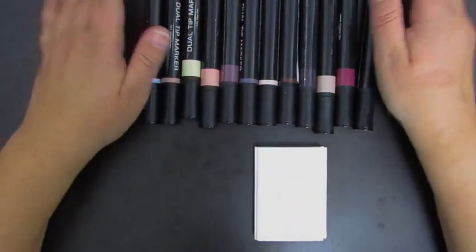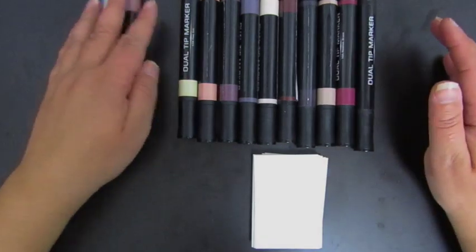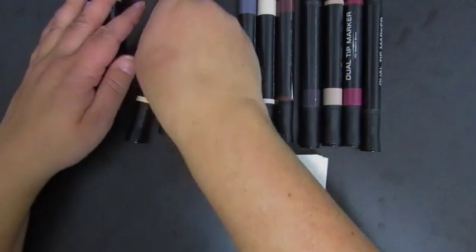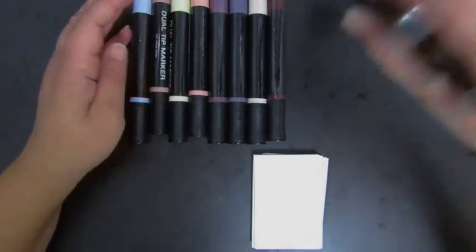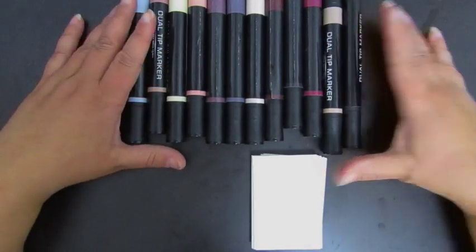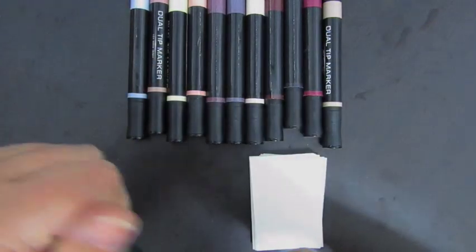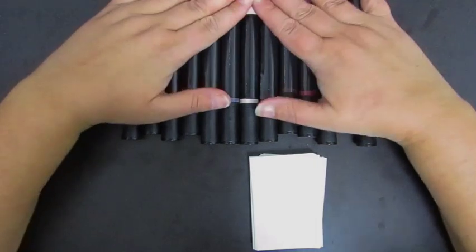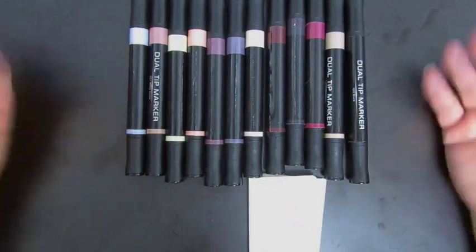So this set is the neutrals colors. There is a bright colors set but in my move I misplaced a few of the colors so I'm not going to be swatching that set. One of the things I do like about these markers, you can look and it will basically tell you which side is bold and which side is the fine tip. Pretty obvious.